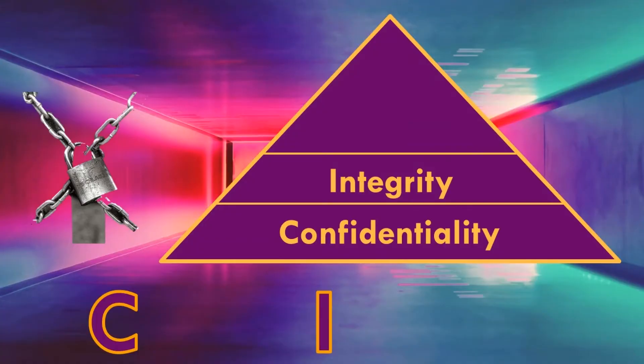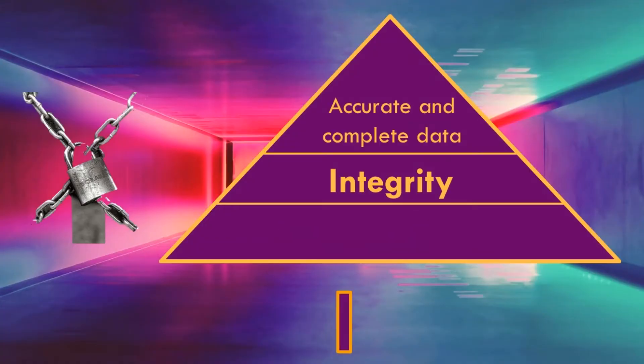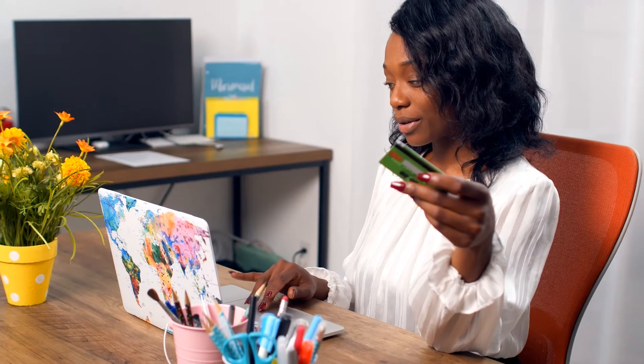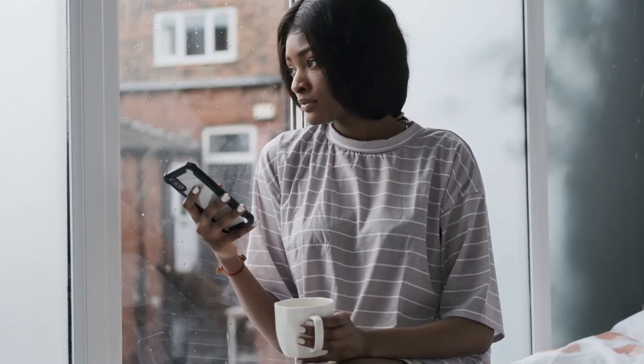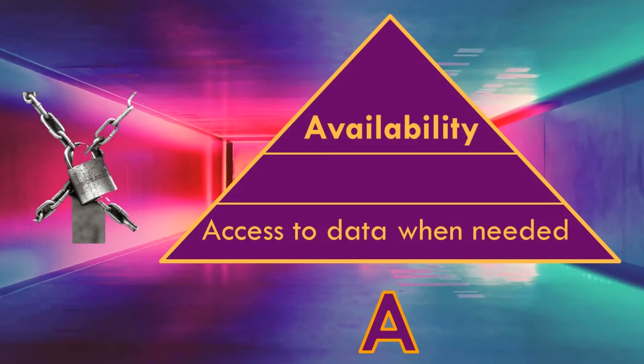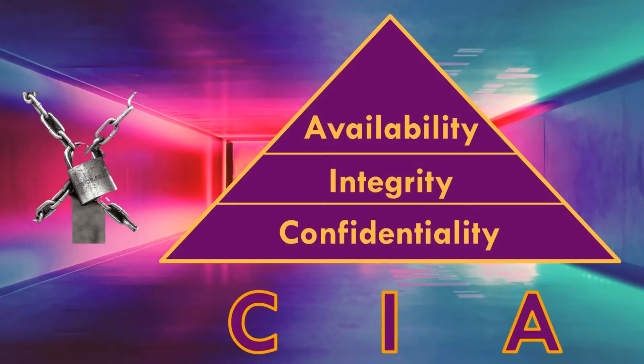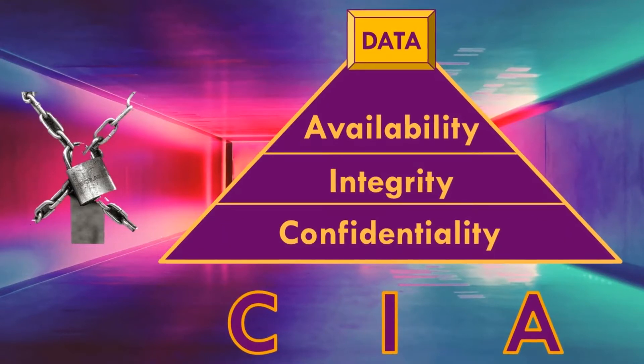Remember, the I is for integrity. Integrity means that there is accurate and complete data. Imagine you are reviewing your credit card statement and you notice that one transaction is present twice, which is erroneous. You depend on the integrity of your bank's record keeping and trust that it is complete and accurate, so you immediately call the merchant to find out why they double charged you. Finally, the A is for availability, which means that an organization or end users can use and access data when needed.